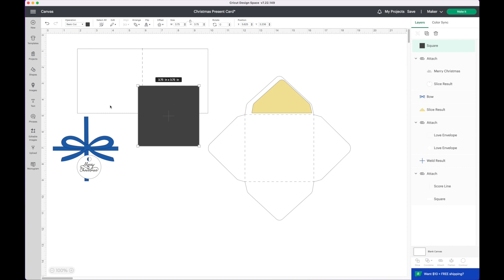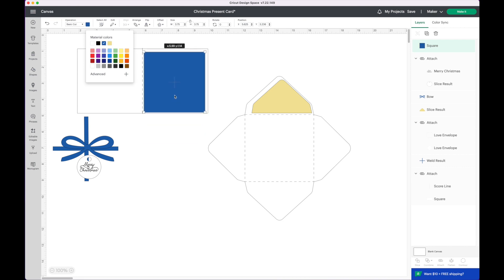I'm gonna change the color and make this be the same color I'm gonna cut my bow out for the front. So the very top I'm gonna click on the color and change that to be blue. That'll be for the inside of my card.